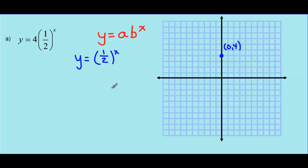We can get more points by using the rate of decay of 1 half — we go down by half for every value of x that we increase. So when x equals 1, our y value decreases to 2. When x equals 2, our y value decreases in half again to 1, and so on. We keep going down by half and down by half. Let's take a quick look at what this function looks like on Desmos.